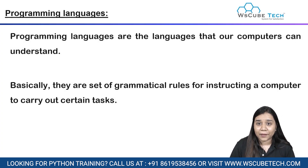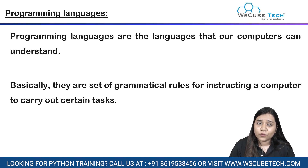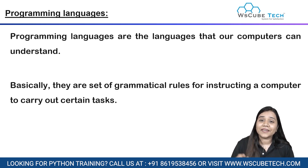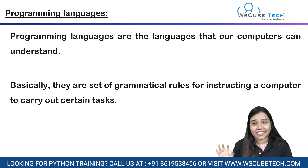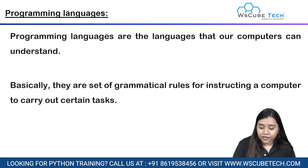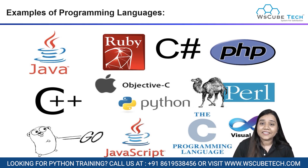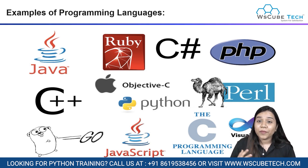Programming languages are nothing but grammatical sets of rules given in the form of instructions to the computer to complete a certain task. There are so many programming languages out there — for example: Java, JavaScript, Ruby, PHP, Perl, Python, C, and C++.